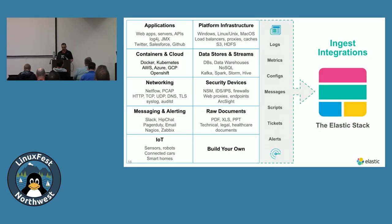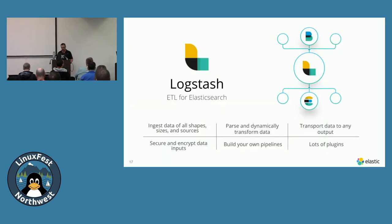Ingestion happens mostly through Beat agents — very thin agents installed at endpoints, written in Go, with no dependencies, fully contained and very lightweight. They can ingest all kinds of data. Some data, like NetFlow data from edge network devices, would be ingested using Logstash, which has many modules and can do all kinds of transformations. It runs on its own machine and requires Java, making it a bit heavier than the Beat agents.